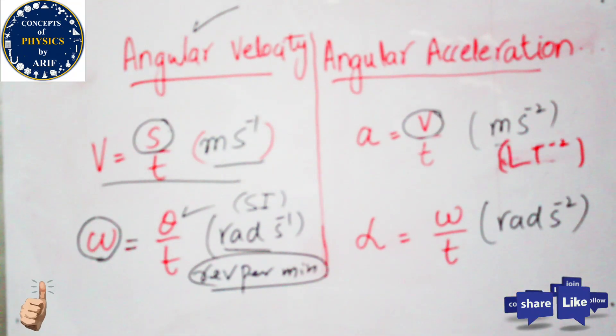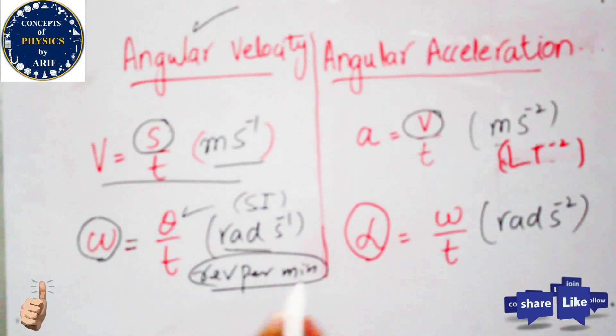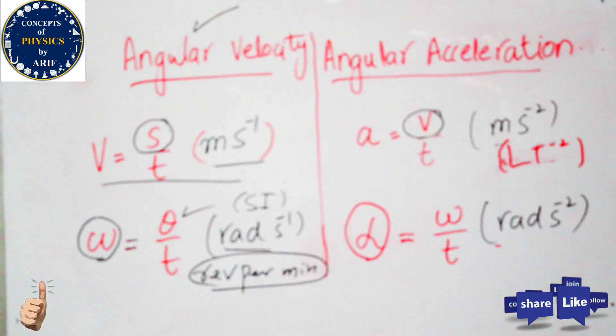Furthermore, angular acceleration is denoted as alpha. It is defined as the time rate of change of angular velocity, and its unit is radian per second squared.